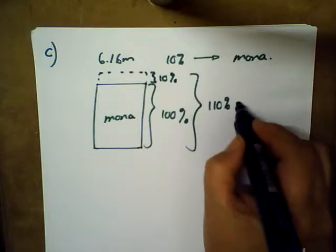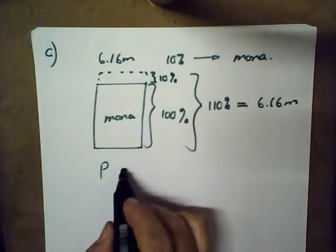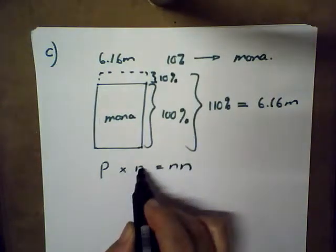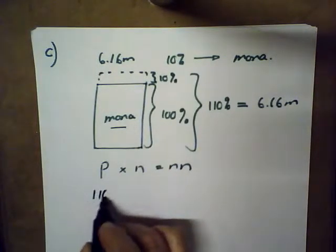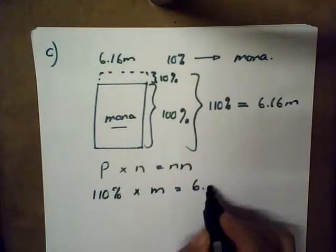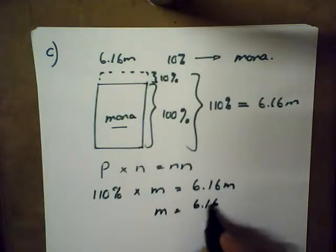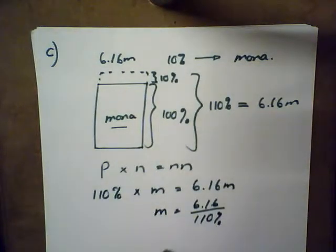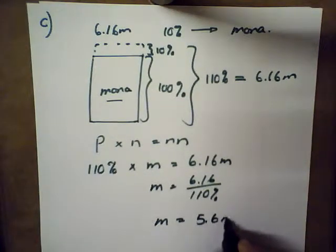My silly little rhyme: percentage of a number equals another number. The number is always the original one that's in the box. So 110 percent of Mona would be 6.16 meters. If we solve, M is 6.16 over 110 percent, and M would give us 5.6 meters. That concludes question one.